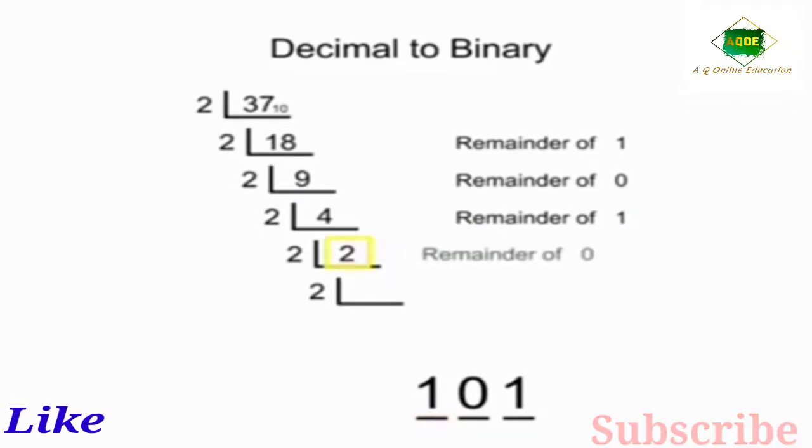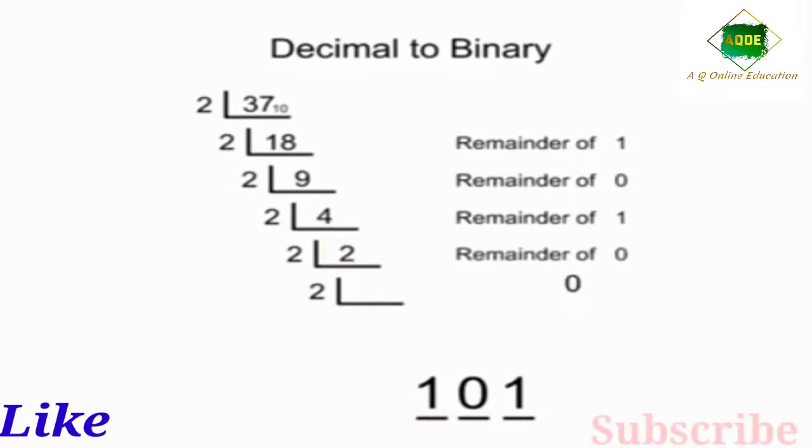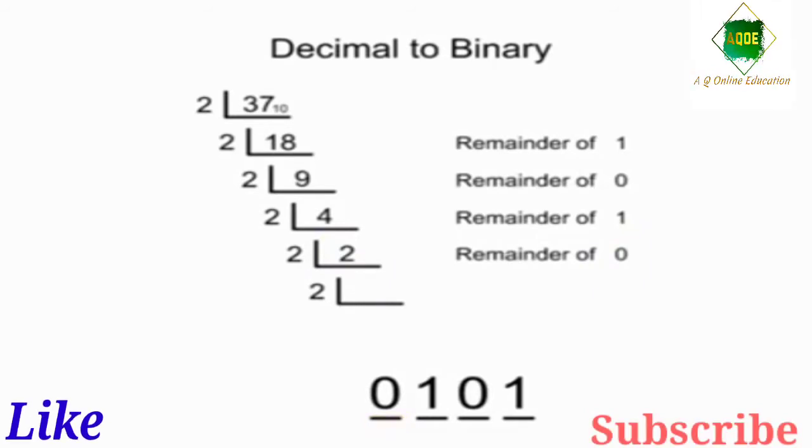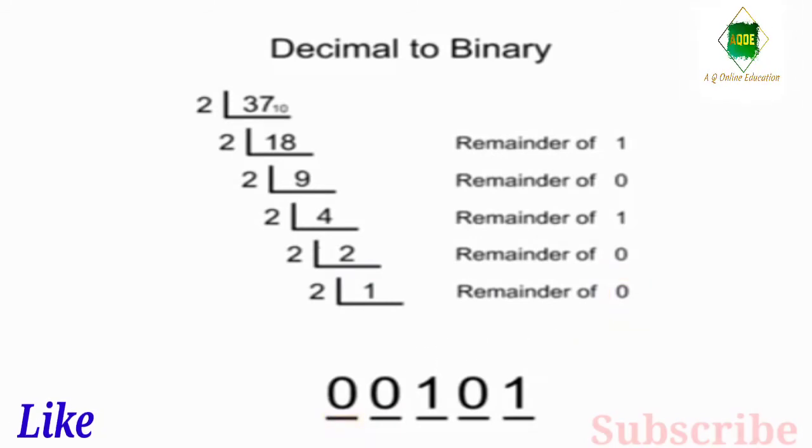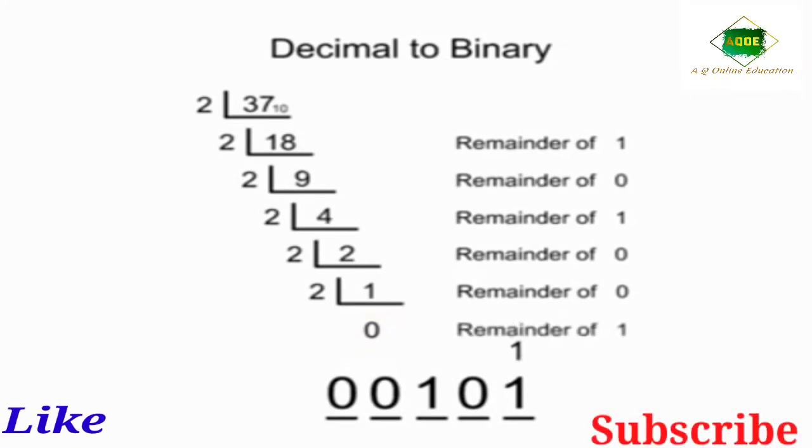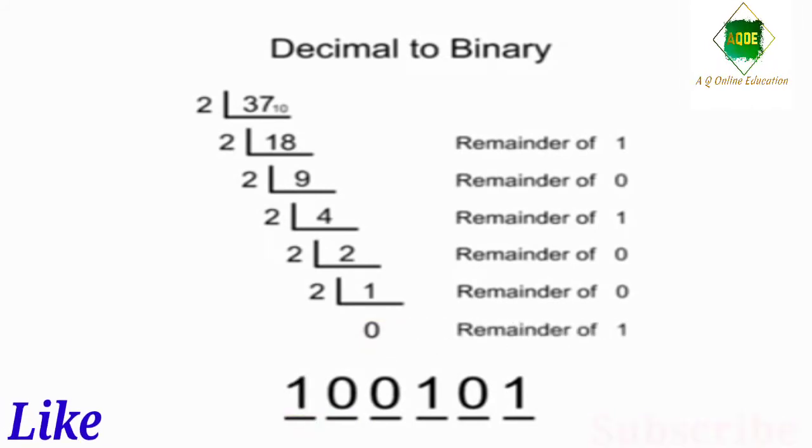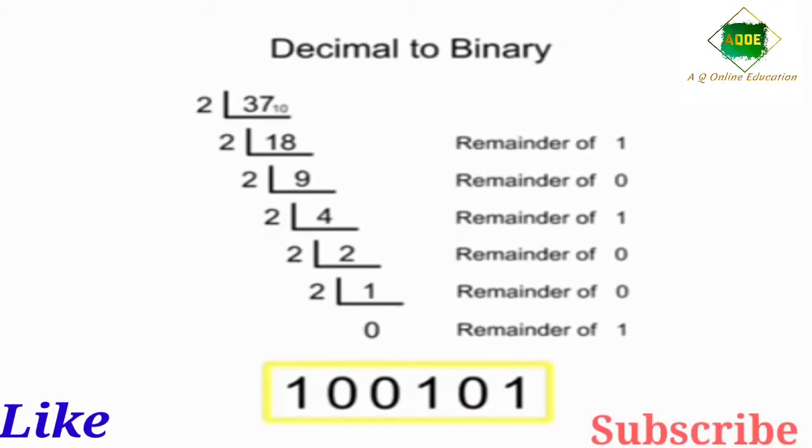Applying this divide by 2 process to each new calculated quotient derives the remainders that become the 0's or 1's used to create the binary string. Continuing until the quotient is 0 and can no longer be divided by 2 completes the conversion process and you have your binary number.